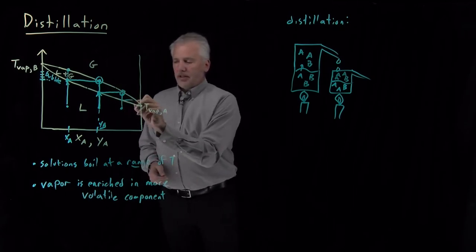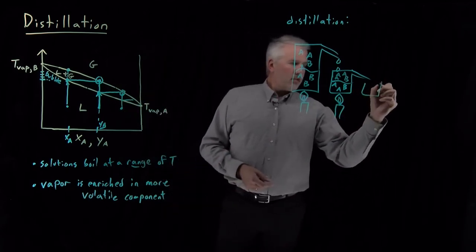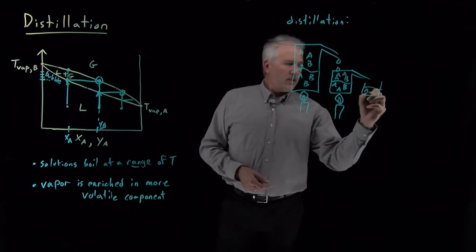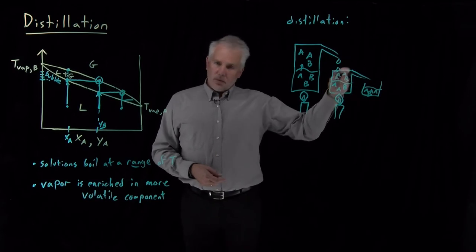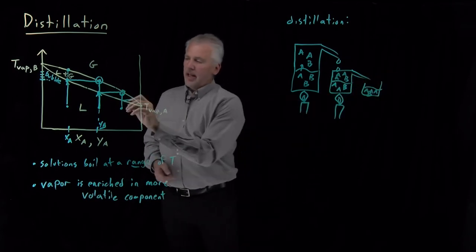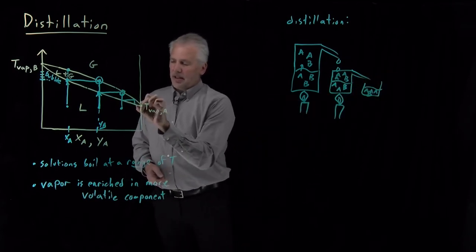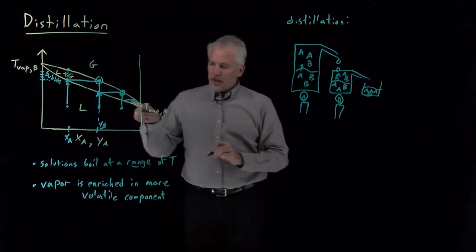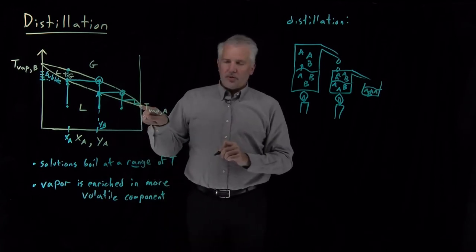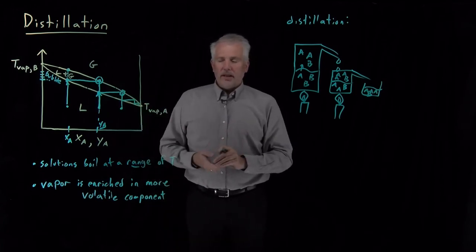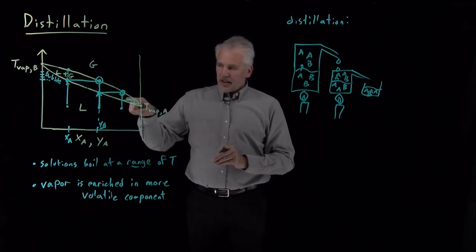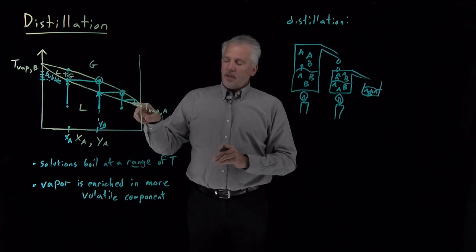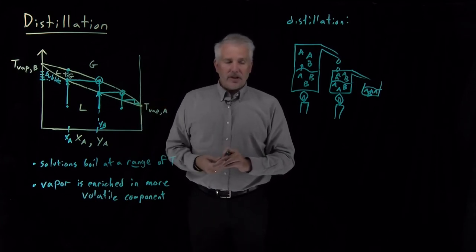If I repeat that process so I can obtain a new liquid over here, I can repeat this process as many times as I want. Every step of that distillation process works me further and further down into this corner, closer and closer to pure component A. So I'll never get quite to the edge, but this is a limiting process. I can make the component A as pure as I wish by continuing to distill it.